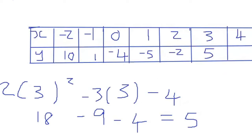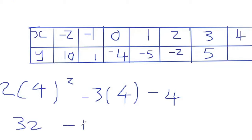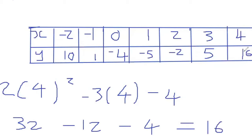The next is to calculate when x is 4. We have 4 squared and 4 in the bracket. So 4 squared is 16, times 2 is 32. Minus 3 times 4 is 12, minus 4. Calculating 32 minus 12 minus 4, my answer is 16. So the y value is 16.